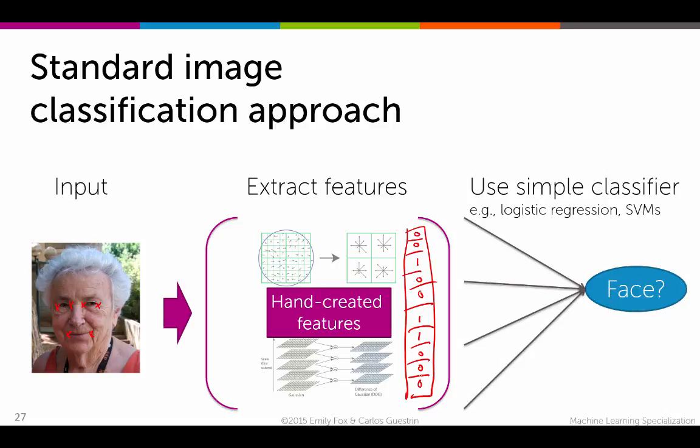For example, a simple linear classifier like we talked about earlier in the module. You can feed it to a simple linear classifier, and some names for those are things like logistic regression, support vector machines, and more. From there, we get a detection as to whether this image is a face or not.